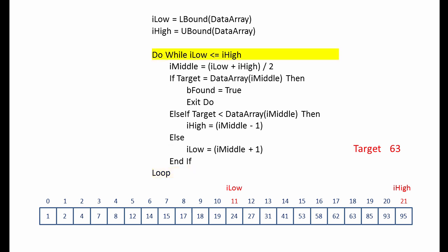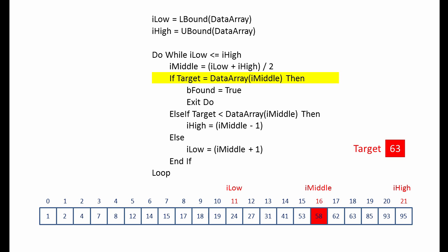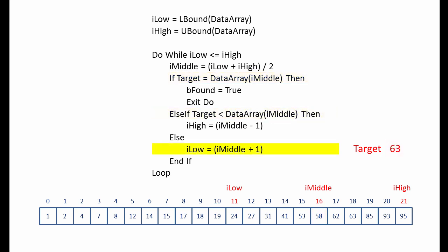And we do the same thing again. We calculate the middle by taking the low plus the high and dividing by two. We ask: is the middle equal to the target? If not, we ask if the target is less than the middle. And if not, we effectively discard the lower half of the list by redefining the low pointer. Notice how the low pointer is approaching the high pointer.